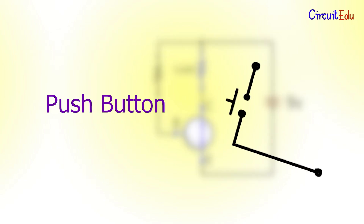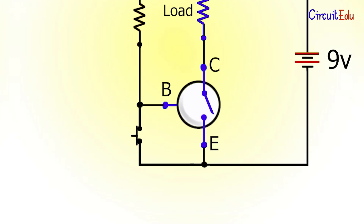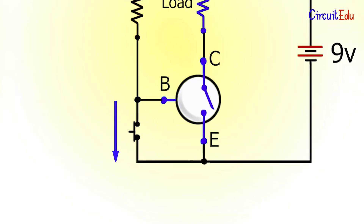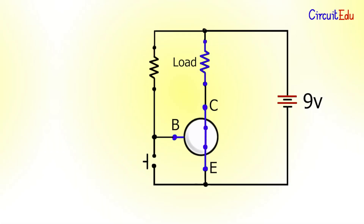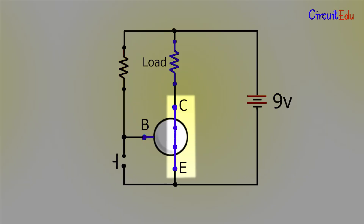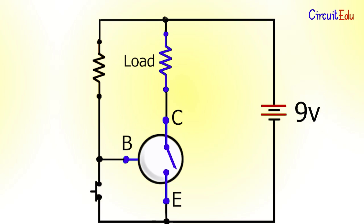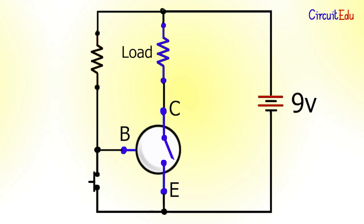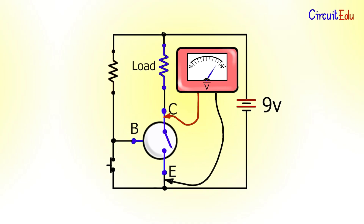If a push button is connected across base and emitter of the transistor, pressing the button will turn the transistor off — because all the current flows through the push button instead of through the base. When the button is released, the transistor turns on again. At open position, since no current flows and hence no voltage drop across the collector resistor, the whole supplied voltage appears across collector and emitter. At closed position, the collector is shorted to the emitter, so voltage across collector and emitter is 0V.